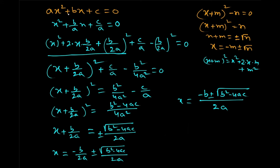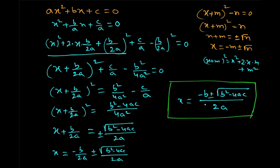Sometimes it is difficult to factorize a quadratic equation — it is not always possible. In that case you can use the squaring method, but that also demands more algebra. So you can directly use this formula: x equals minus b plus or minus root over b squared minus 4ac divided by 2a. This is one of the most important formulas in algebra. Experienced people simply use this formula to find the roots, and we will discuss the characteristics of the roots next time.